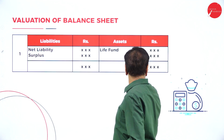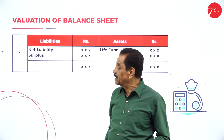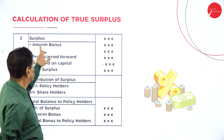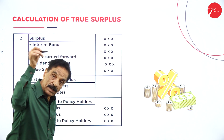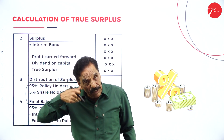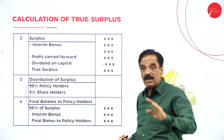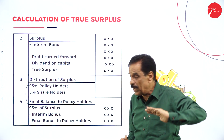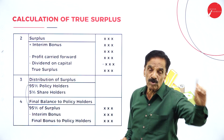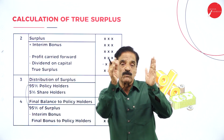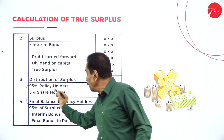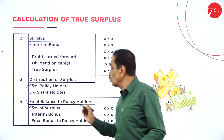So the steps are: this is the life fund; net liability should be deducted; the difference is the surplus. Then out of the surplus, add interim bonus already paid, minus profit carried forward for next year, minus dividend — balance is the true surplus. Step number 3: out of the true surplus, 95% goes to the policyholder, 5% goes to the shareholder as per the law. If the ratio given is 1:19, we follow that; but if there is no information, 95% goes to the policyholder and 5% to the shareholder.